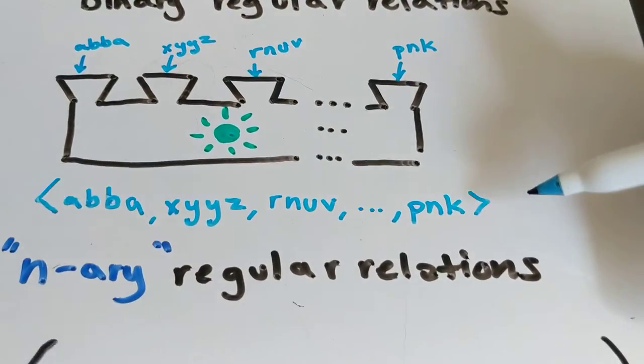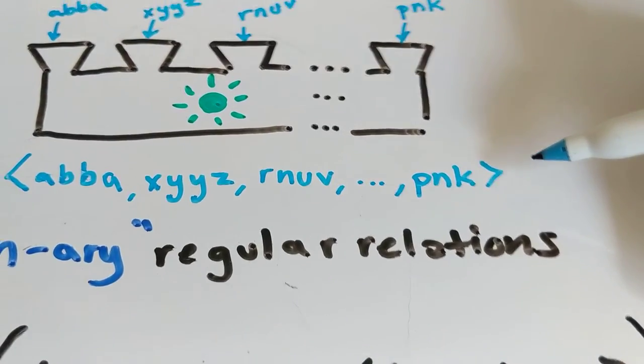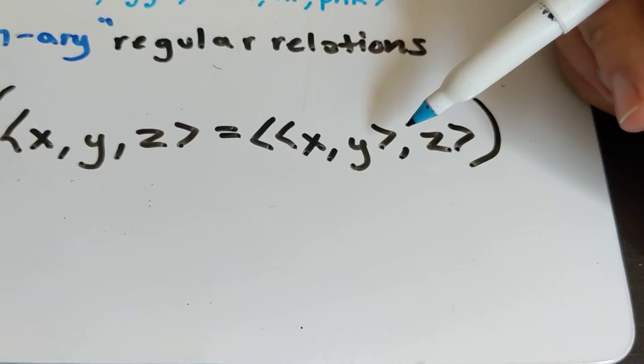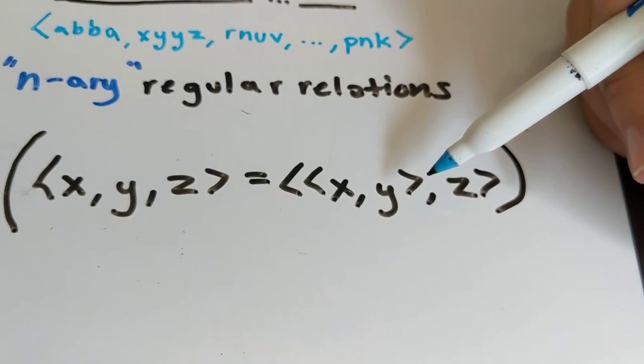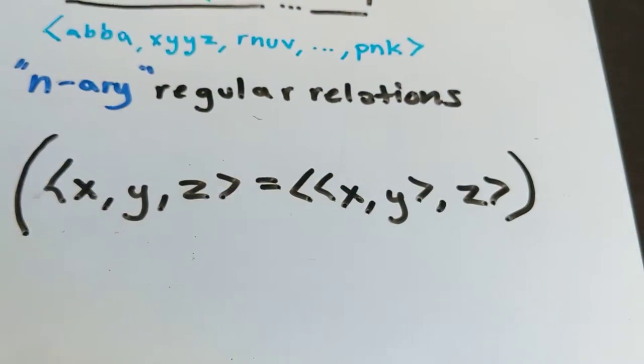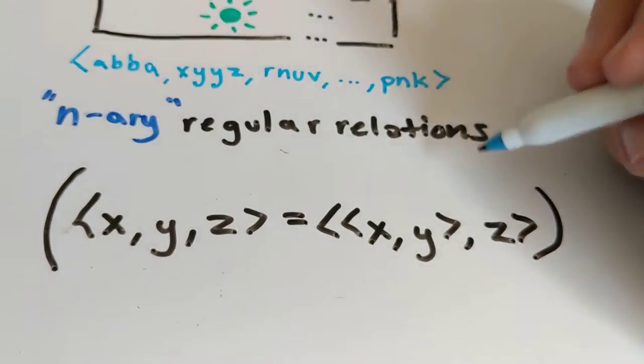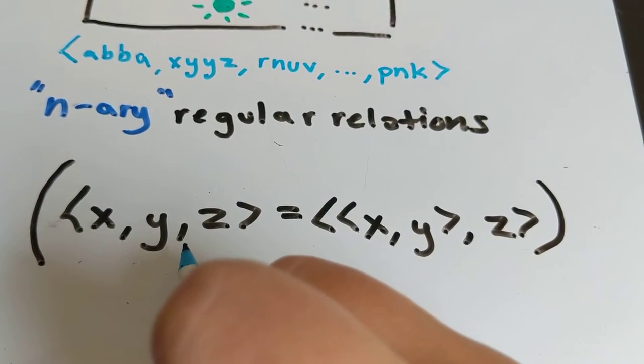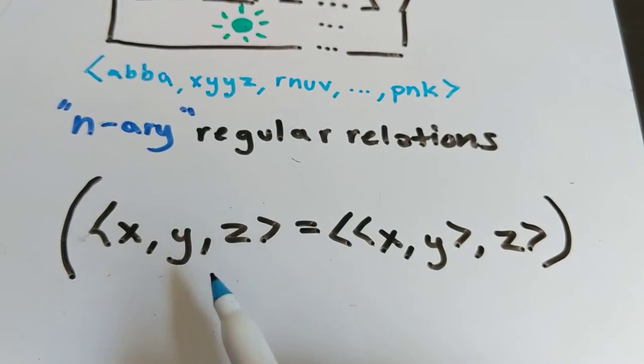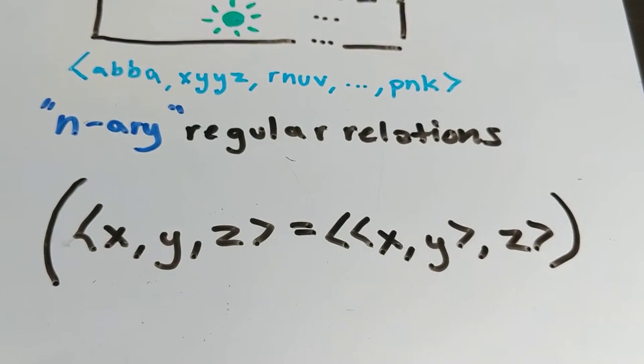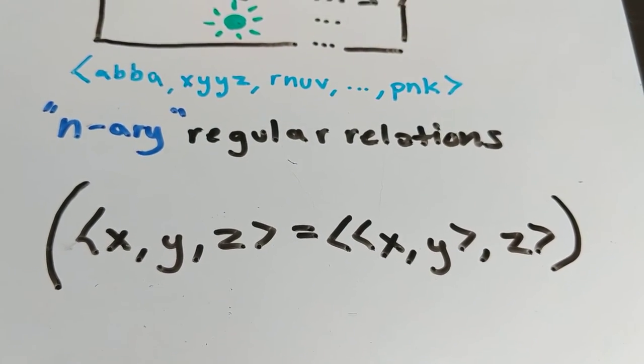You can always break these down into binary relations. So if you start looking at these really long relations and start thinking this is really confusing it might be easier for you to break them down like this. Some people see all the brackets and get confused, other people see the list and get lost. But whatever is easier for you you can always rewrite anything that is an n-ary ordered thing into a pair.